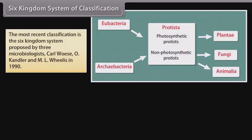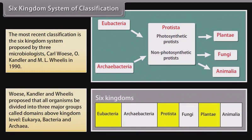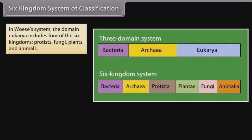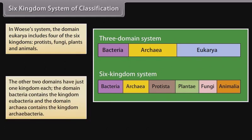Six kingdom system of classification: the most recent classification is the six kingdom system proposed by three microbiologists — Carl Woese, O. Kandler, and Emil Wilhs in 1990. They proposed that all organisms be divided into three major groups called domains above kingdom level: Eukarya, Bacteria, and Archaea. In Woese's system, the domain Eukarya includes four kingdoms: Protists, Fungi, Plants, and Animals. The domain Bacteria contains the kingdom Eubacteria, and the domain Archaea contains the kingdom Archaeabacteria.